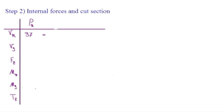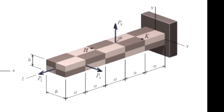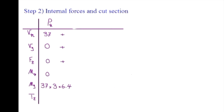For Px, we know that it causes two sorts of forces at the cut section: Vx and moment about the y-axis. All other components are zero. So Px would be 37 kips. Vy and Fz are zero. Mx would be zero. My would be Px times the distance of the force toward the centroid of that cut section, which is 3 times A. A is 6.4 inches, so that would be 37 times 3 times 6.4.